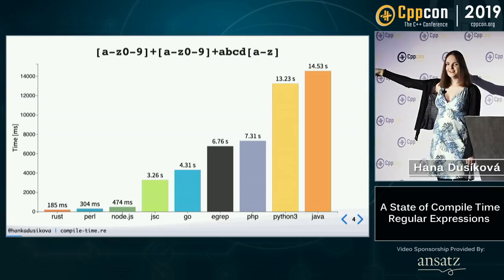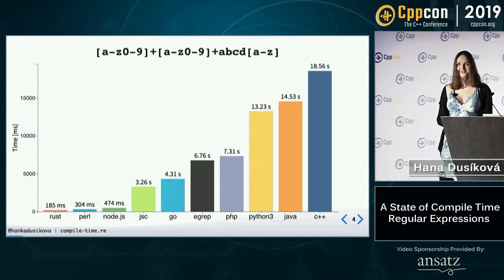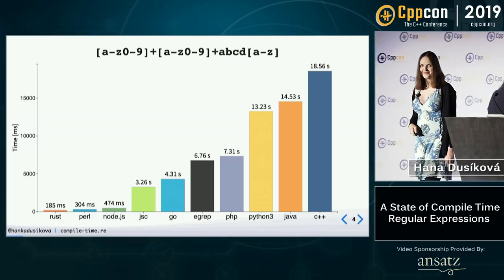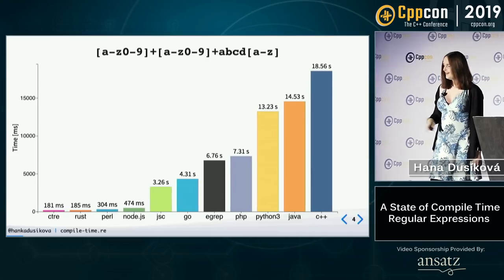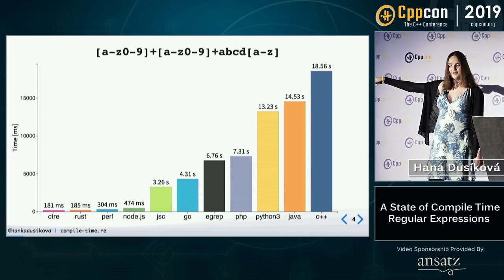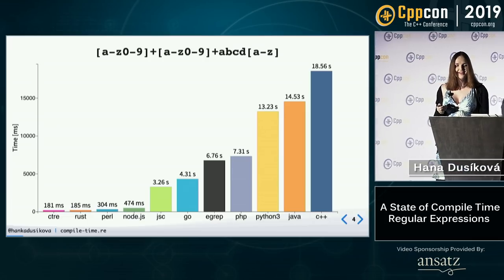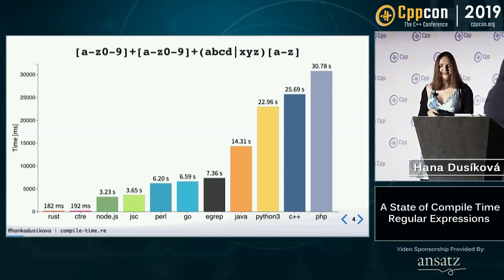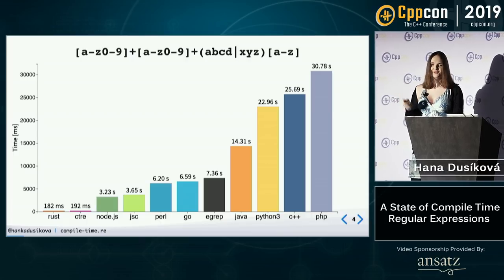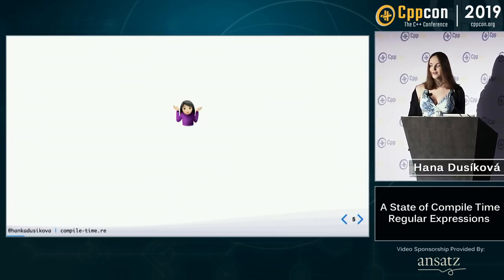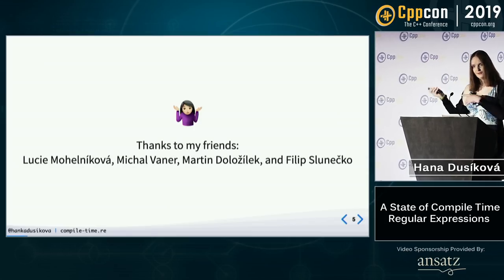Java, Rust on the left, Java on the right, C++ on the right. CTRE, this is the library I'm talking about, is on the left for this regular expression. A different regular expression is a little bit different, and Rust and CTRE are switched. Thanks to my friends who provided me a benchmark for this.